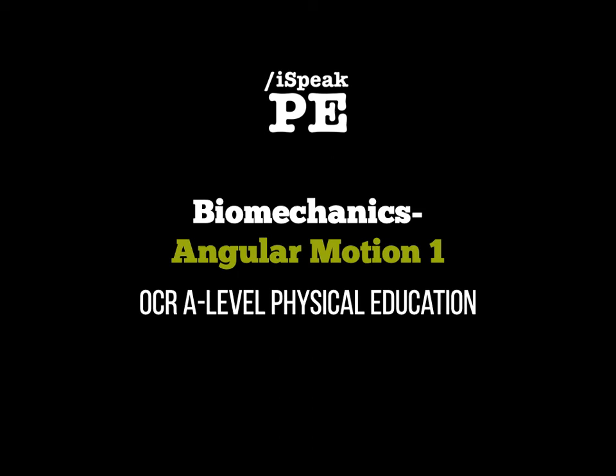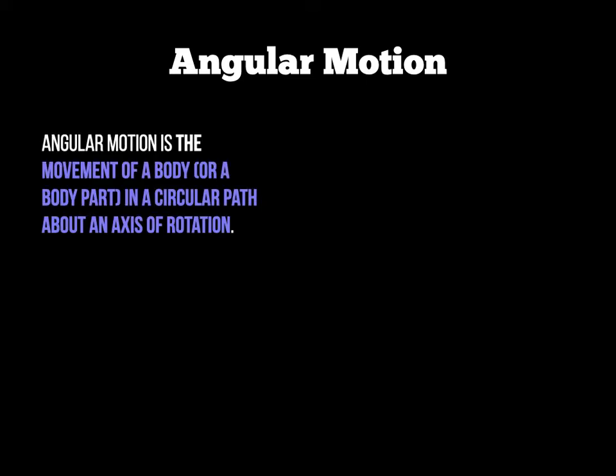Hello again folks and welcome to another screencast on biomechanics. In this particular screencast we're going to be looking at angular motion. Angular motion differs from linear motion in the sense that it's the movement of a body, an object, or a person in a circular path, and it usually revolves or rotates around an axis of rotation.